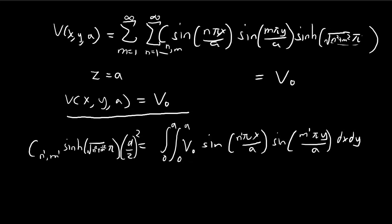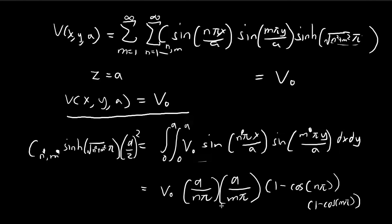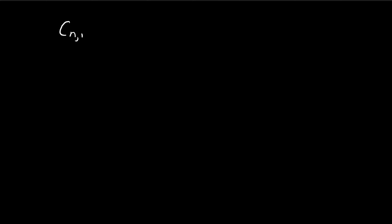After applying Fourier's trick, all that remains is to evaluate the integral of sin(nπx/a) from 0 to a, and similarly for y. You can work these out yourself, but the result gives a known form that we can use to isolate C_{nm}.